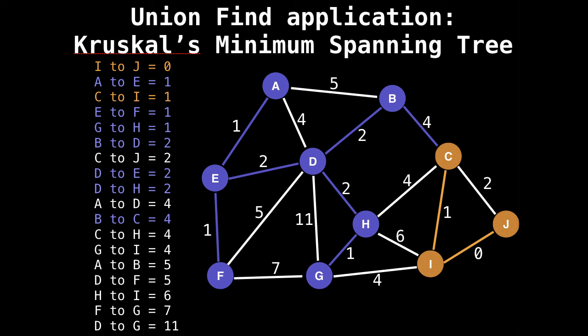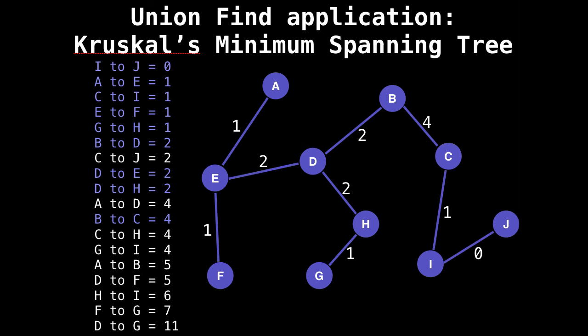Next, we want to include edge B to C. B to C belong to different groups. So merge the two groups into one larger group. So we have found the minimum spanning tree using Kruskal's minimum spanning tree algorithm.